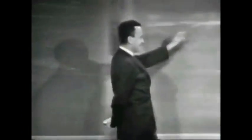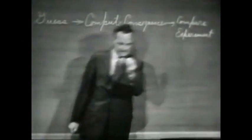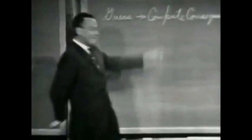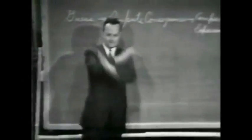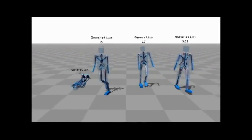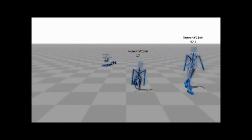Richard Feynman taught this: if it disagrees with experiment, it's wrong. And that simple statement is the key to science. It doesn't make a difference how beautiful your guess is, how smart you are, or what your name is. If it disagrees with experiment, it's wrong — that's all there is to it. Computer simulations must be constantly refined and allowed to run long enough until they match reality.